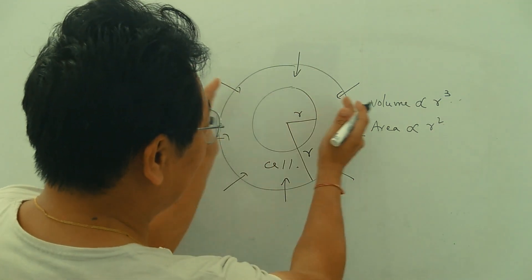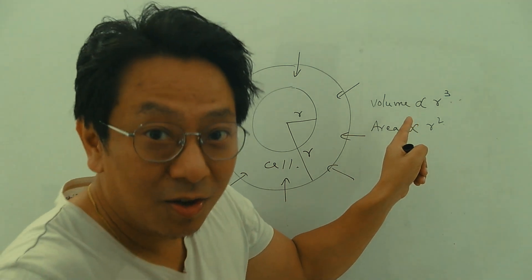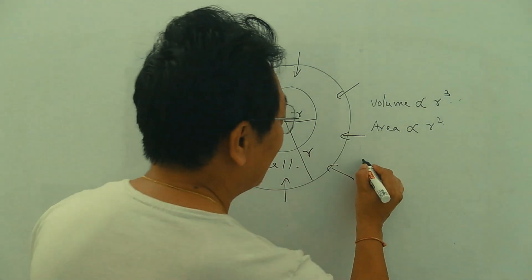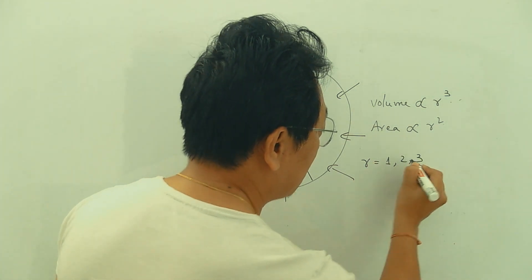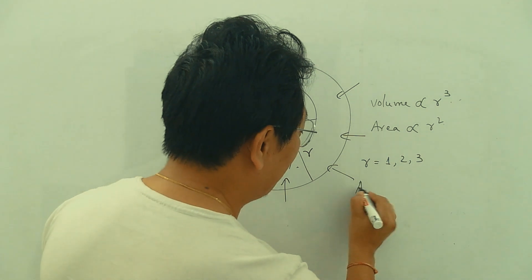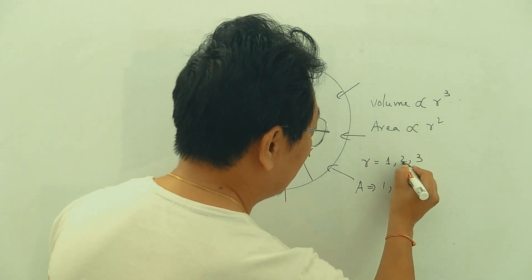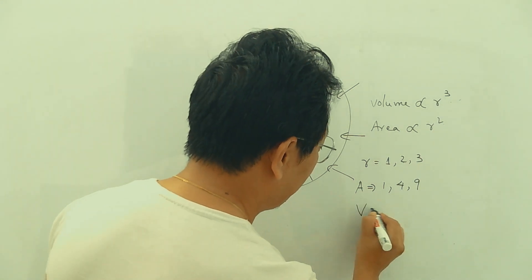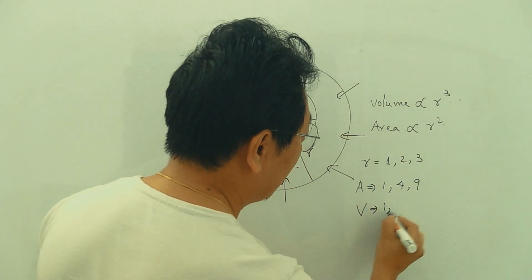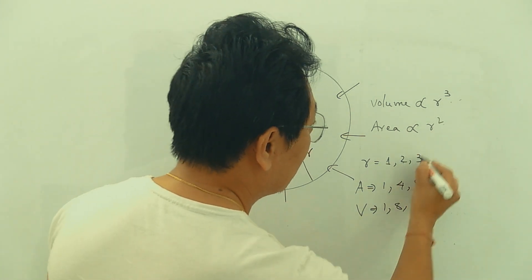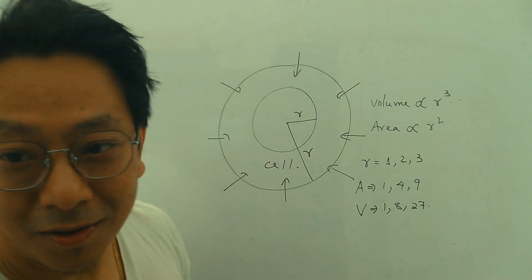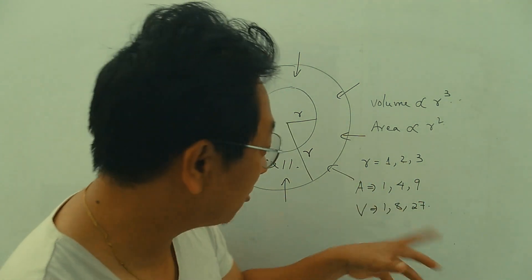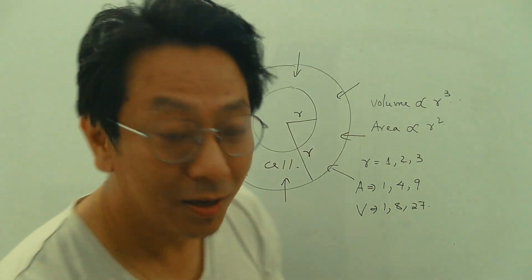When the radius increases, volume increases more times than area because of the cube. For example: when radius goes from 1 to 2 to 3, area goes as 1², 2², 3² — that is 1, 4, 9 — whereas volume goes as 1³, 2³, 3³ — that is 1, 8, 27. So when radius increases 3 times, area increases 9 times whereas volume increases 27 times.